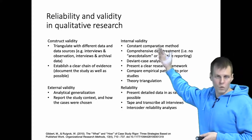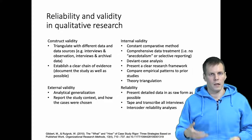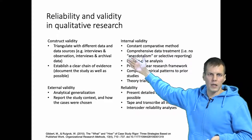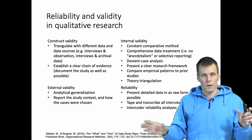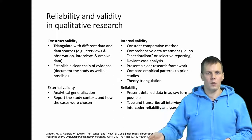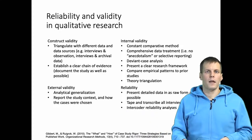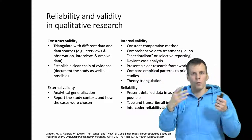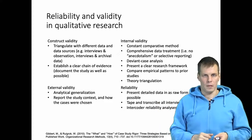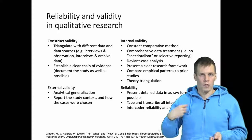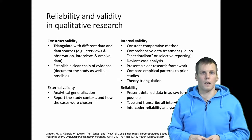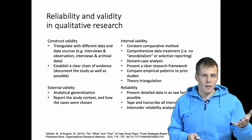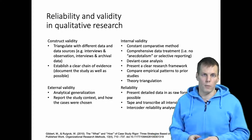Then we have construct validity, which refers to whether your data measures the concepts you claim them to measure. One technique is triangulation: if you have two different kinds of data — for example videos and interviews, or interviews and company documents — you code both, and if you extract the same meaning from two different datasets, that supports the claim that you are making a valid inference. For instance, if three different kinds of data all indicate that a company is innovative, that is more construct-valid than relying solely on one person's claim that the company is innovative.